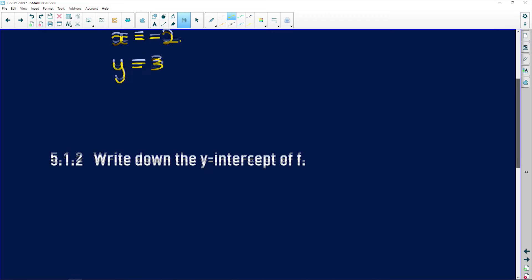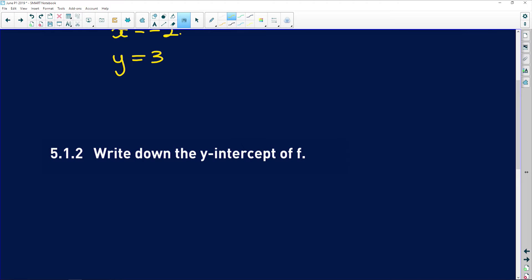5.1.2 says write down the y-intercept of f. The moment you see y-intercept, you should know x equals 0. So remember, f(x) is equal to 1 over x plus 2 plus 3. So we make x equal to 0. So f(0) is equal to 1 over 2 plus 3, which equals 3 and a half. So the y-intercept is (0, 3.5).